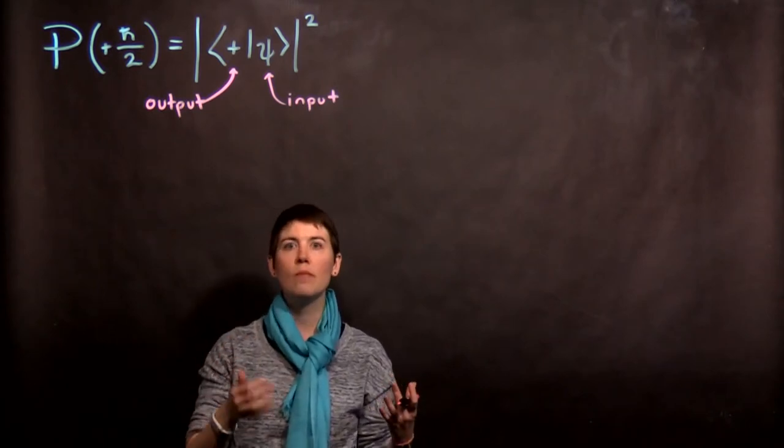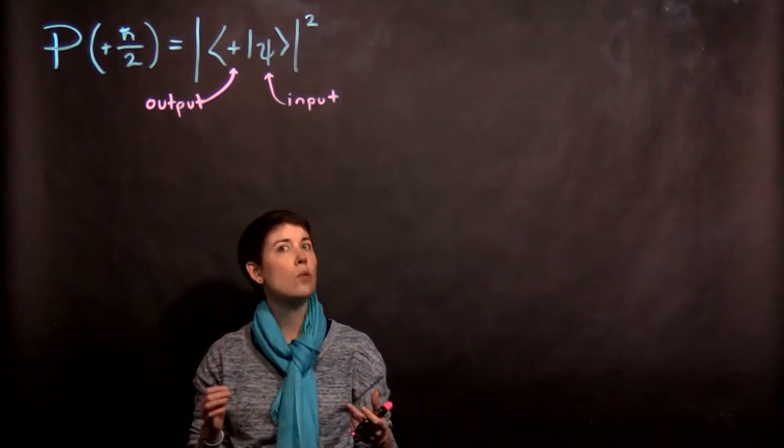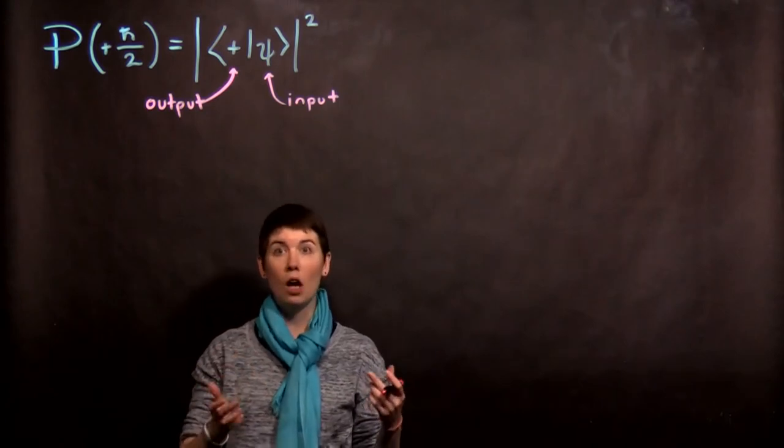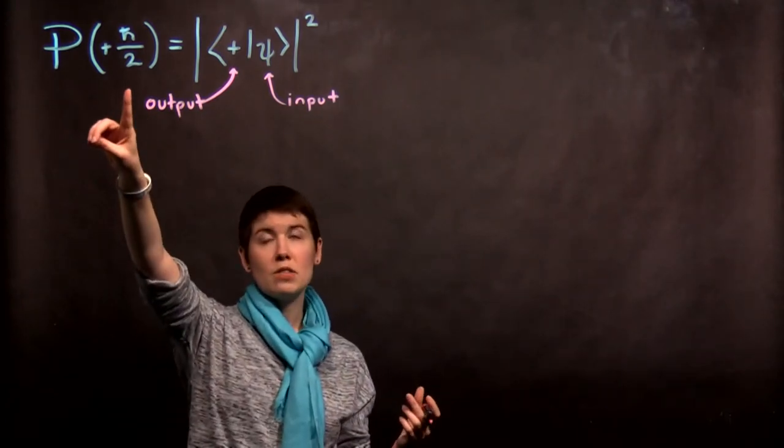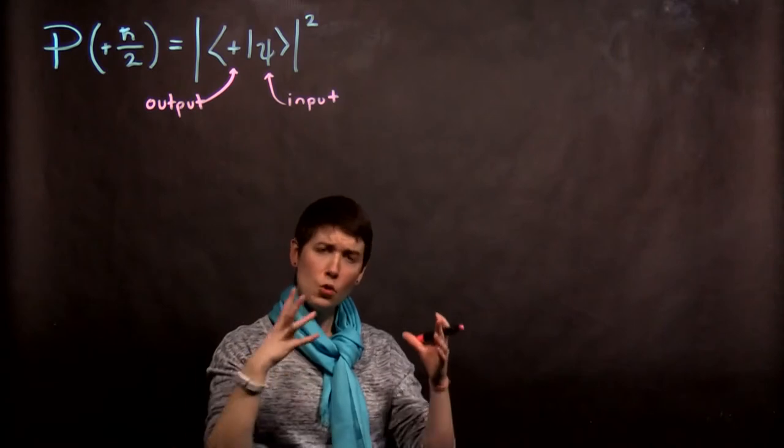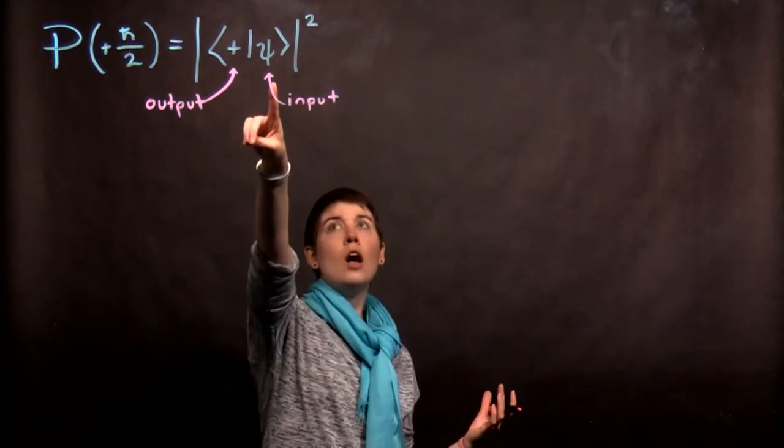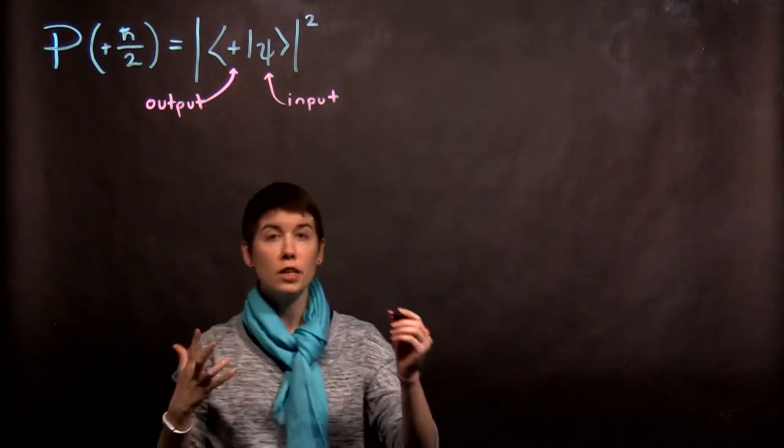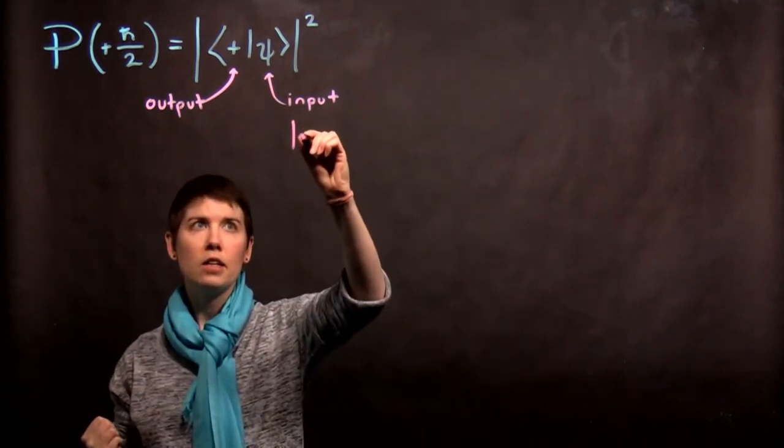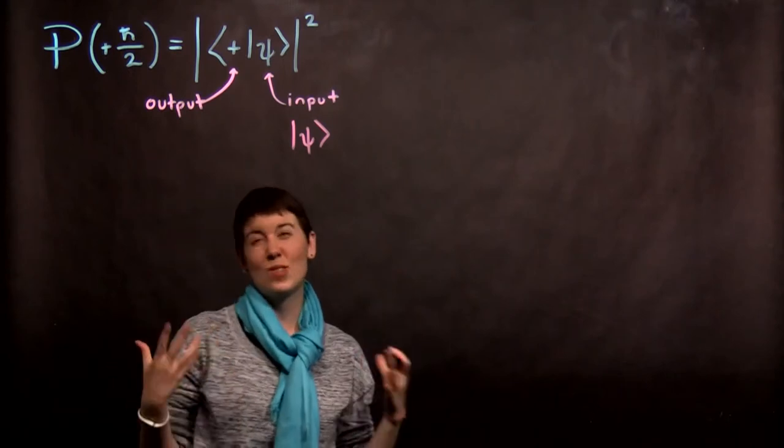So a question we might ask is, what is the probability of measuring spin up? So that's going to be plus h-bar over 2. And you have to initially have your particles prepared in some sort of state, or we're going to call that psi. So our input state is a ket, and we're just going to call it a general ket psi.